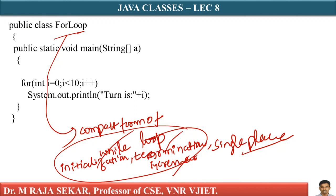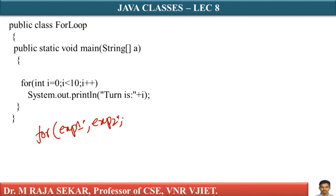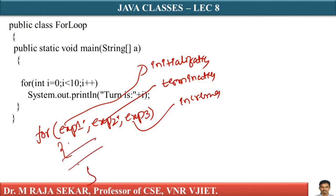This loop is repeatedly executed as long as the condition is true. The syntax of the for loop is: for(expression1; expression2; expression3). Expression one is initialization, expression two is the termination condition, and expression three is generally the increment. The body of the for loop follows.